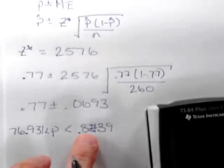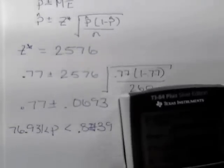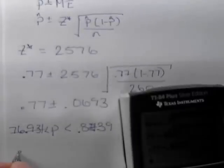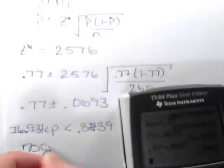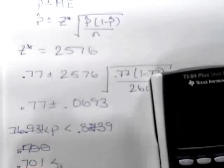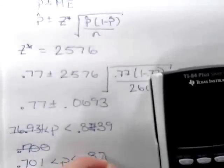Correction: the lower bound rounded to three decimal places is 0.701. So the interval is 0.701 less than p less than 0.839.